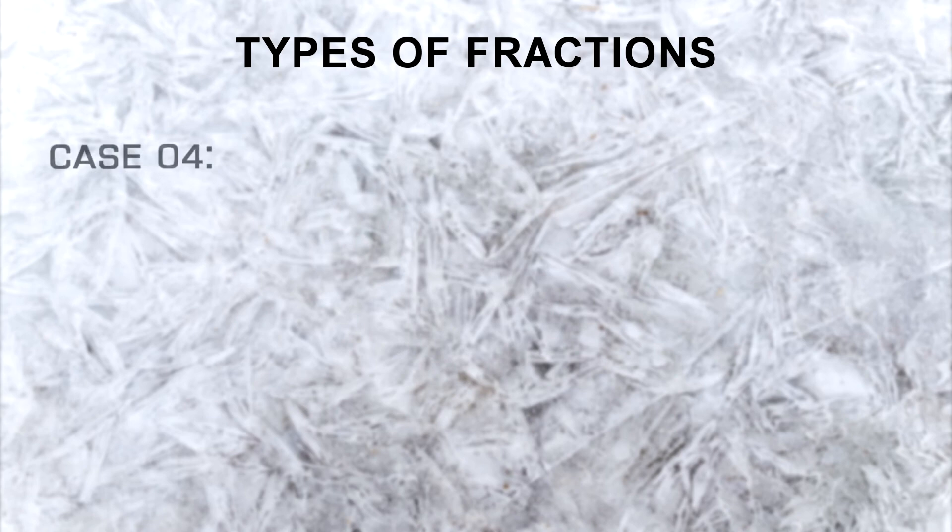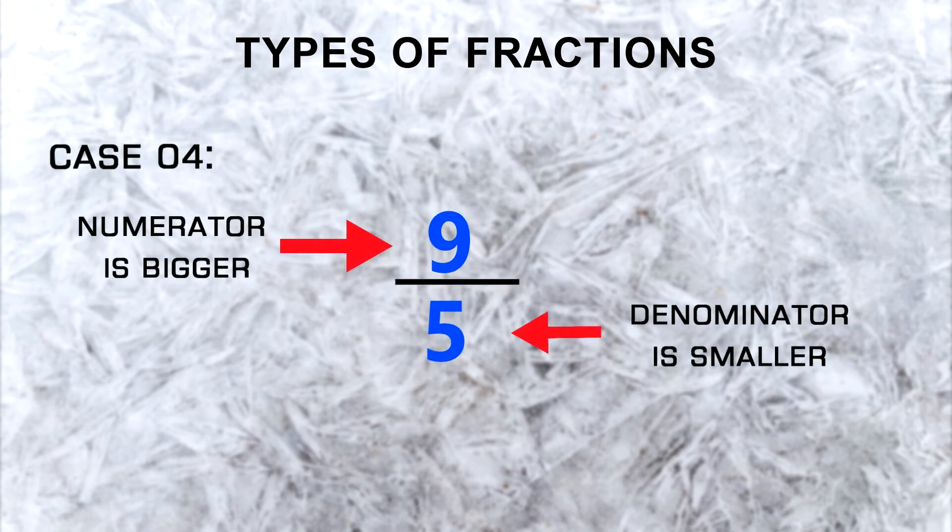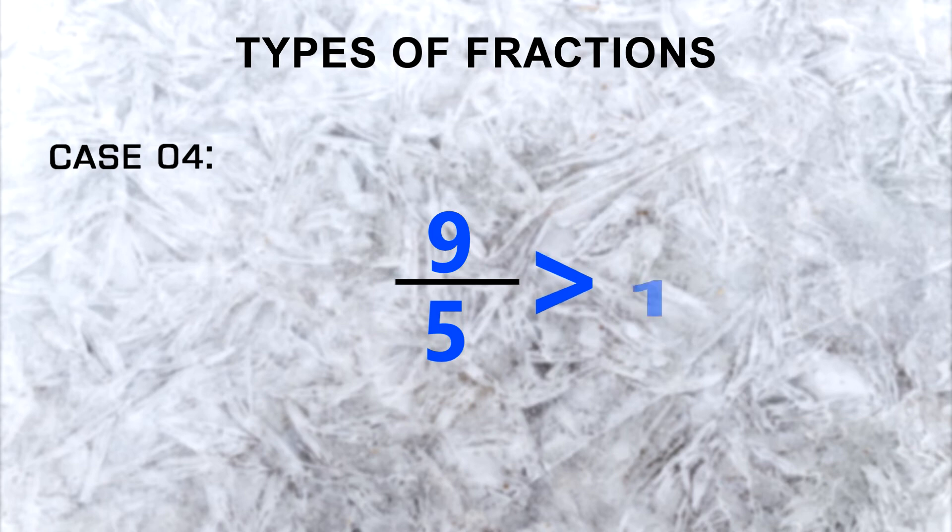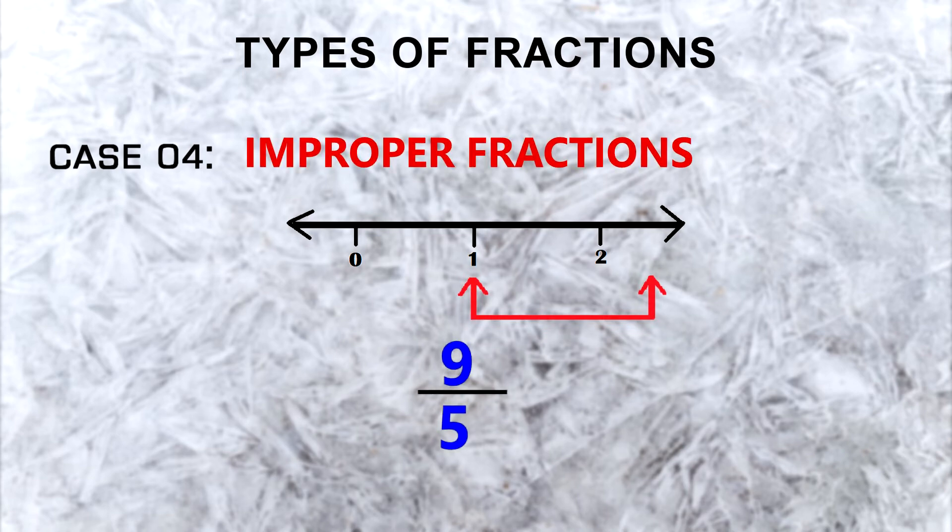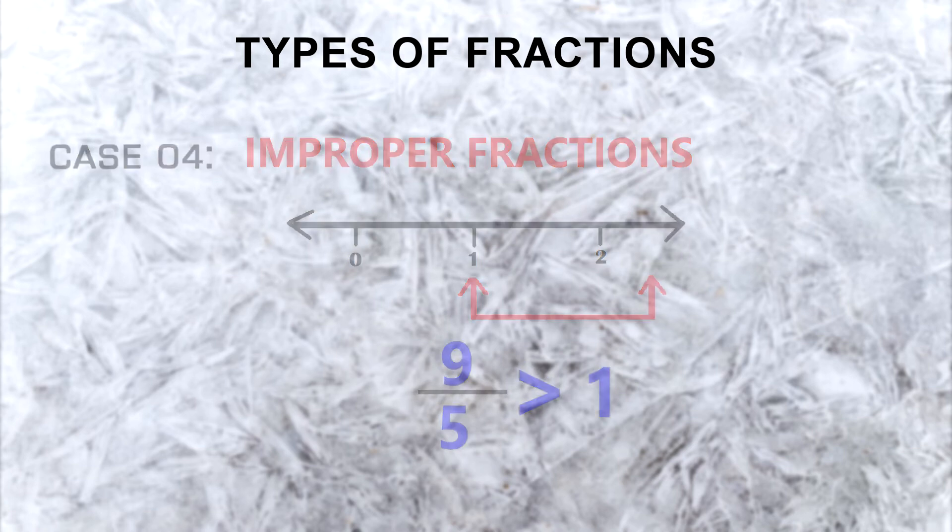The next rule says if the top number is greater than the bottom number, the value of the fraction will be bigger than 1. That means it will be somewhere in this section of the number line which goes on forever. These are called improper fractions, and since their value is greater than 1, they aren't really used to represent smaller parts of things.